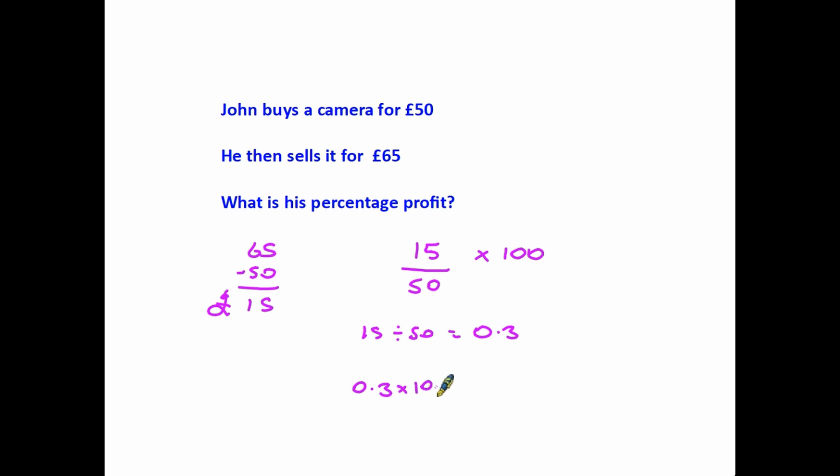0.3 multiplied by 100 to turn the decimal into a percentage gives us 30, so John made a 30% profit. If he had sold the camera at a loss, it would not have changed the calculation at all — it would simply mean that the percentage change would have been a loss, not a profit.